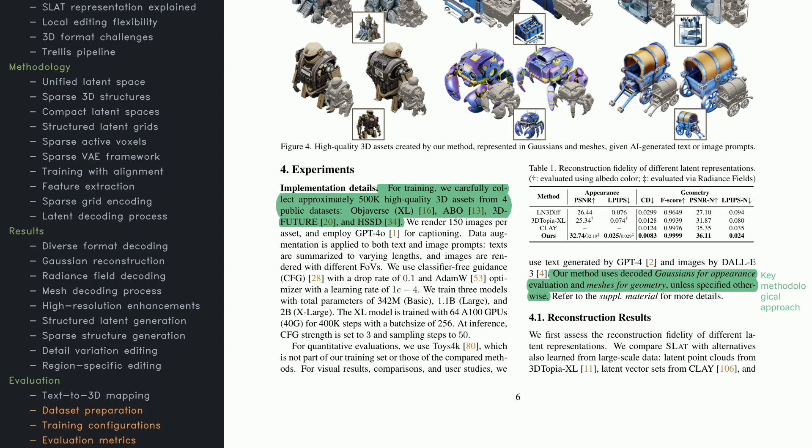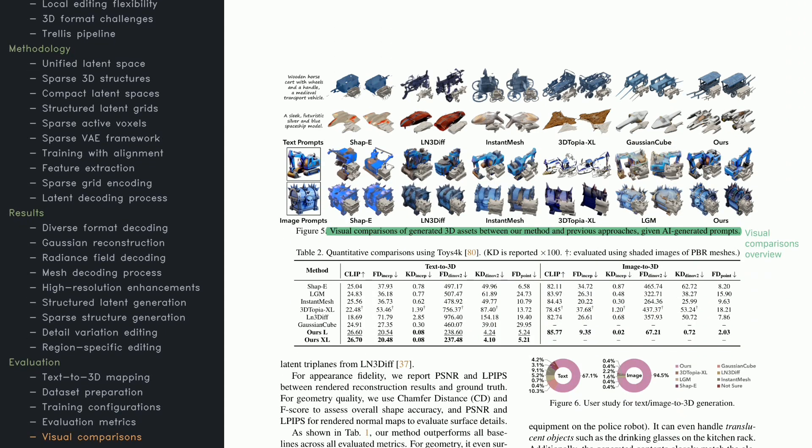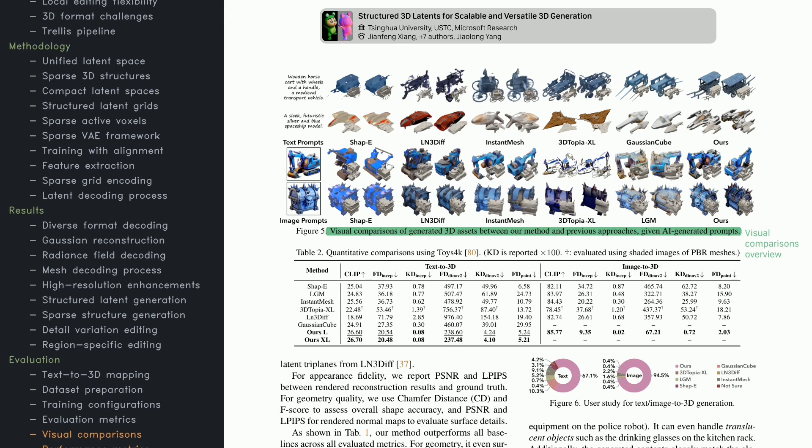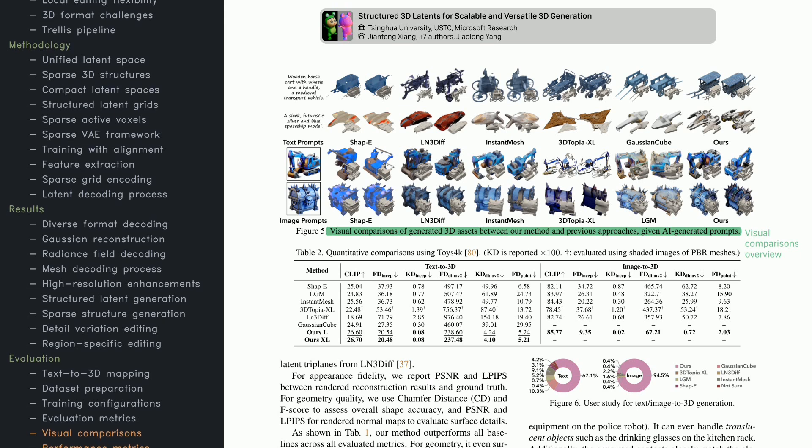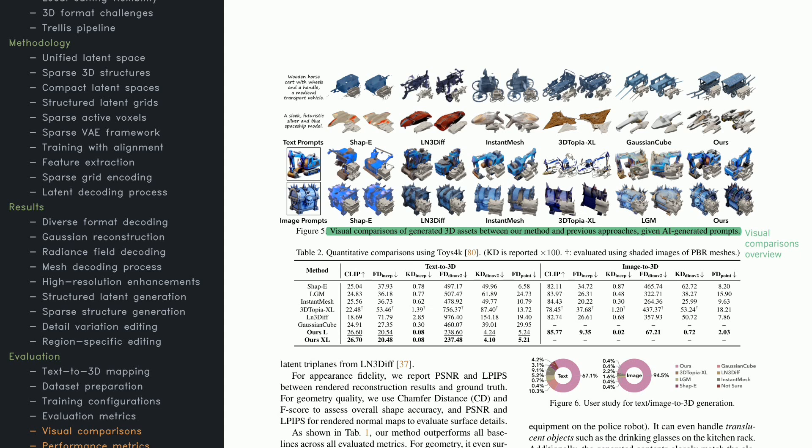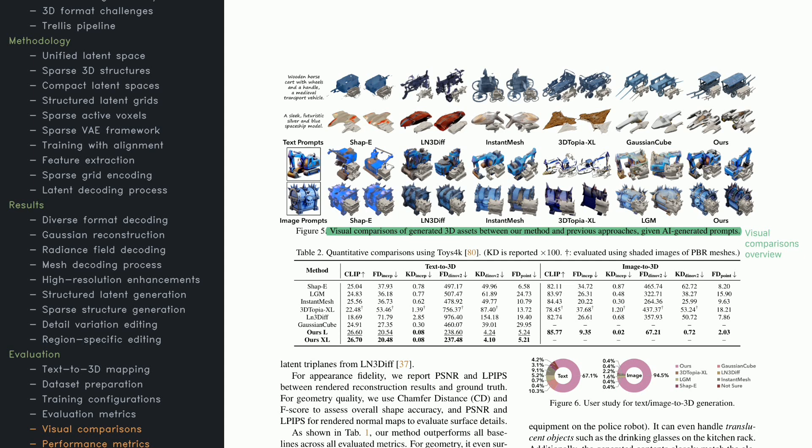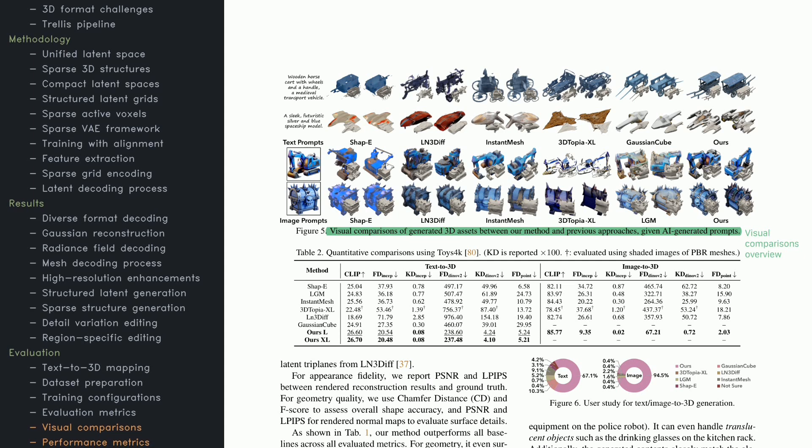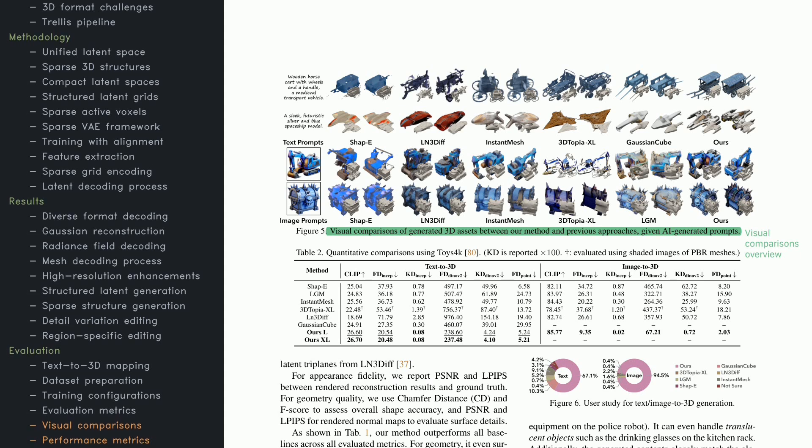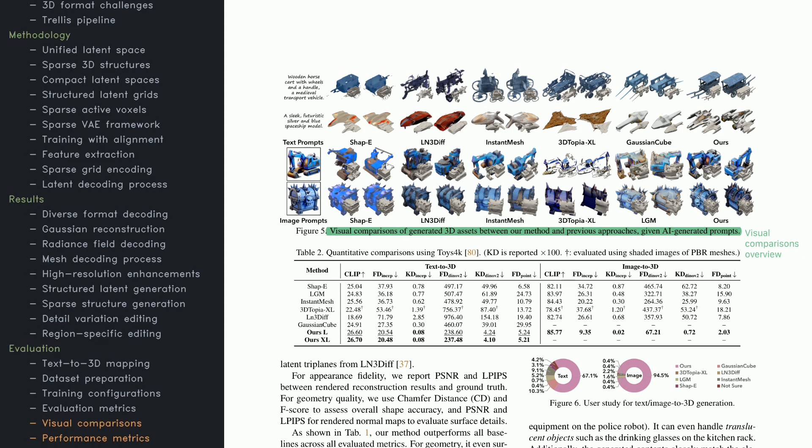The visuals compare how different 3D generation techniques handle text and image prompts. Look at Figure 2 and see the differences in clarity and detail among methods like SHAP-E, LN, 3Diff, and 3Dtopia-XL. You'll notice how this proposed approach creates sharper, more coherent shapes. Check out the table for metrics on geometry accuracy and appearance. The method stands out for its precise 3D forms and high-quality textures. Prompts like a wooden horse cart or a futuristic spaceship produce distinctive and detailed results, showcasing a level of realism the other methods struggle to achieve.